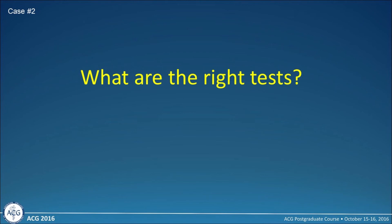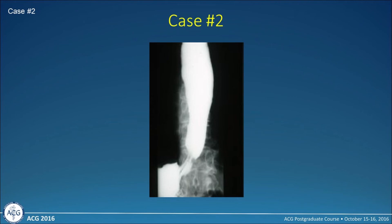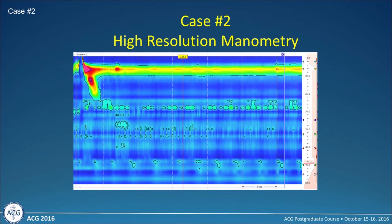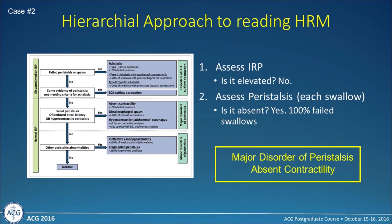Because of ongoing dysphagia despite treatment, I perform a barium esophagram. The column of barium persists, the esophagus looks dilated with tapering at the end — similar to case one. I move on to high resolution manometry. We can see the upper esophageal sphincter, but there's very low pressure below it and basically no evidence of peristalsis. Going through the hierarchical approach, the IRP is not elevated — in fact the LES pressure is low — but there is absence of peristalsis. This is a major disorder of peristalsis: absent contractility by the Chicago classification.